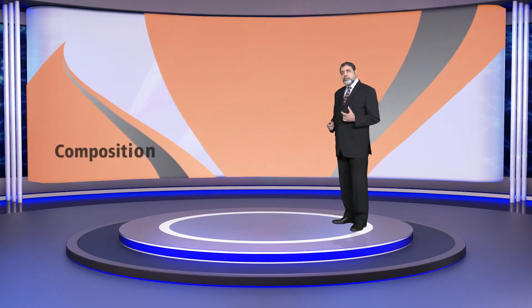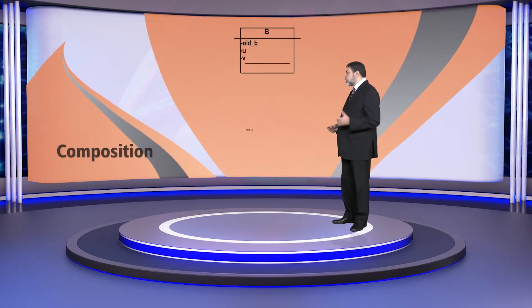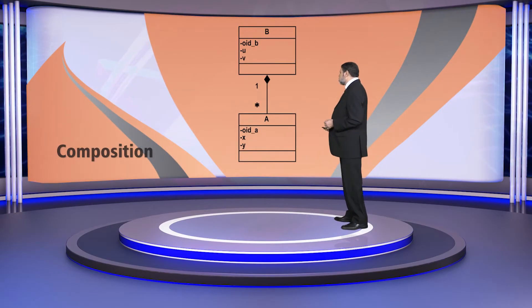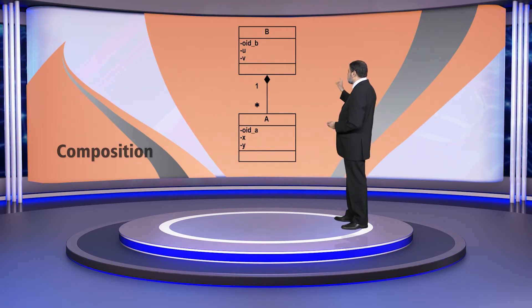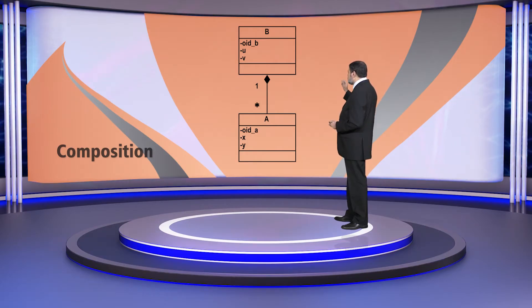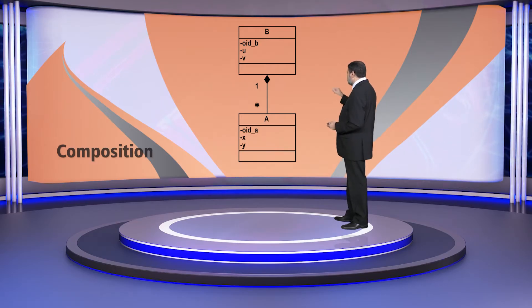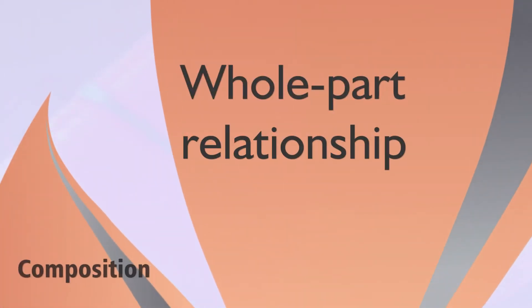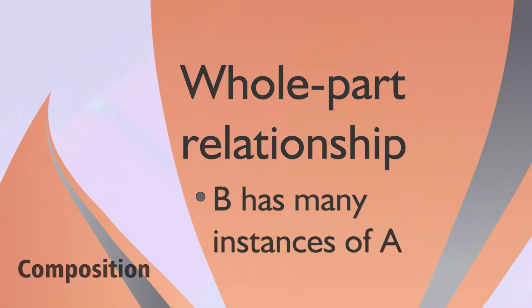Let's assume we have two classes A and B. In this particular case, B is the whole and A is the part. So B holds certain instances of A in it. Composition is represented by a filled diamond. This is a whole-part relationship, so B has many instances of A.